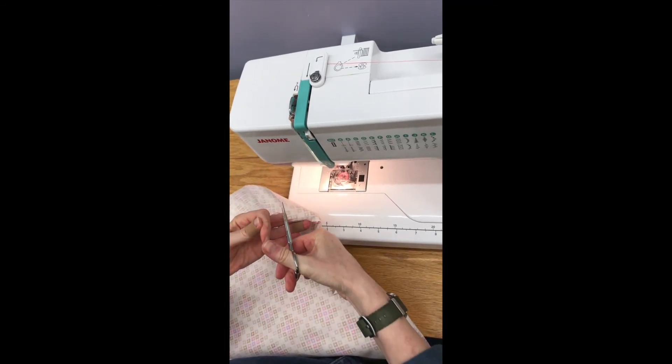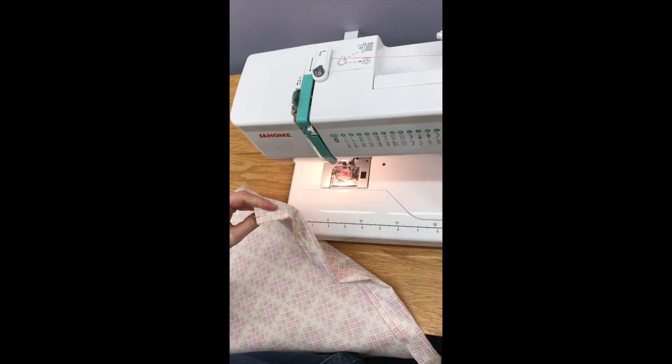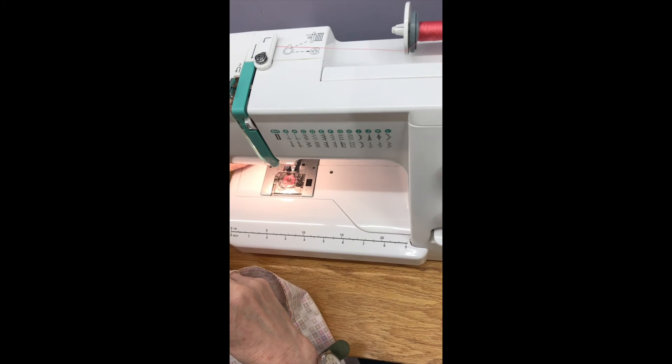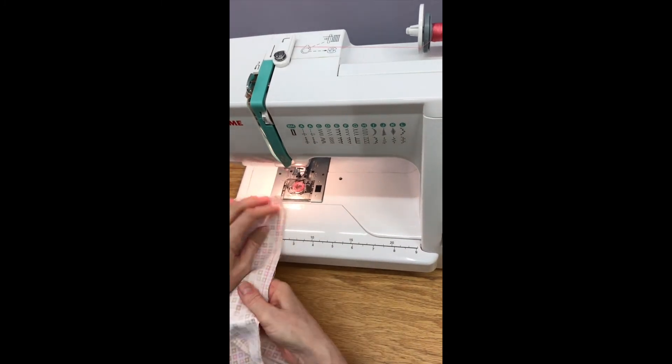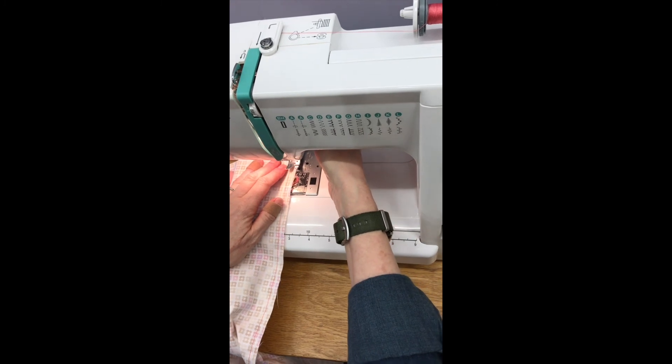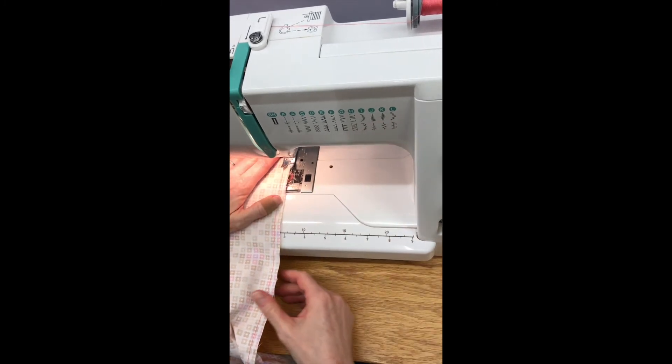Then you're going to finish your seam edge with a zigzag stitch. So you're going to go to zigzag, and whenever you zigzag, your seam allowance is 1/8 so it goes right off the edge. And you don't need to backstitch on a zigzag.